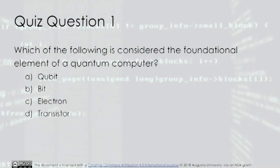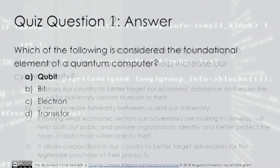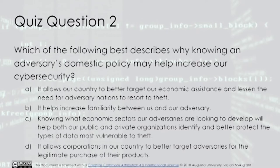Quiz Question 1: Which of the following is considered the foundational element of a quantum computer? A. Qubit. B. Bit. C. Electron. D. Transistor. The answer is A: Qubit.